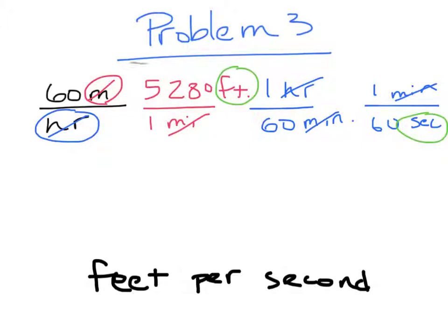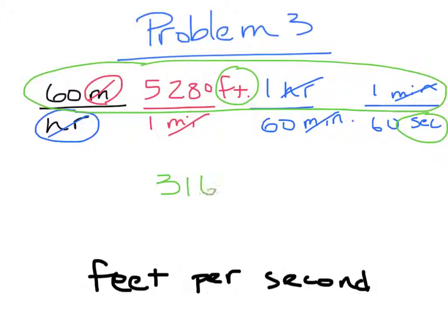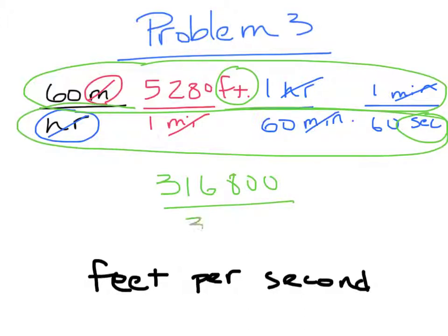So I simply multiply all the top together. So 60 times 5,280 is 316,800. Multiply the bottom together, and I get 60 times 60, which is 3,600. These zeros cancel. That's nice. And then I have to deal with, I'll just divide this. 3,168 divided by 36, and I get 88. So the answer is 88 feet per second.